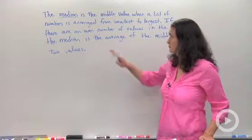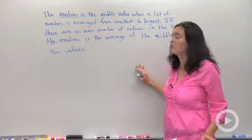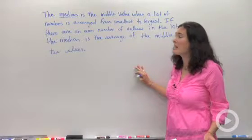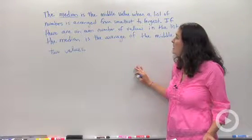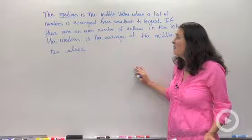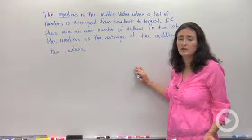Let me show you how it's done. The median is the middle value when a list of numbers is arranged from smallest to largest. If there are an even number of values in the list, the median is the average of the middle two values.